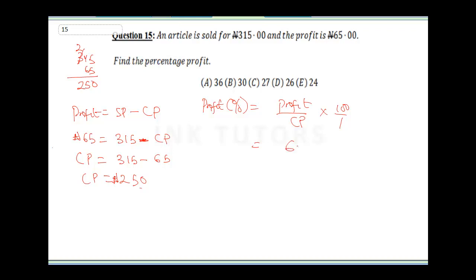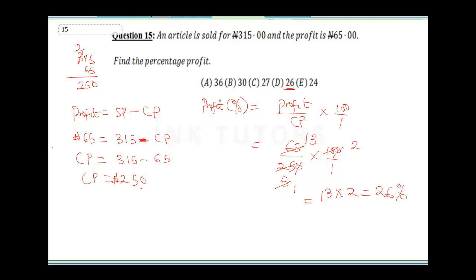Now the percentage profit = 65 ÷ 250 × 100. Simplifying: 65/250 × 100 = 6500/250 = 26. So the percentage profit is 26%. The final answer is D.